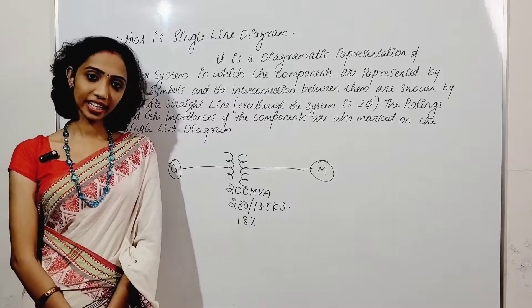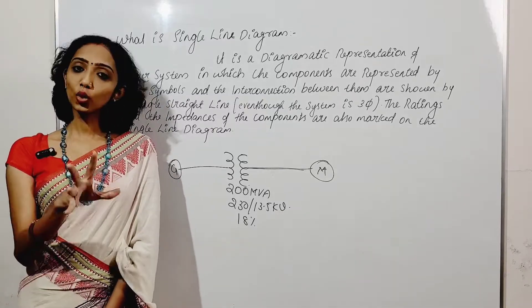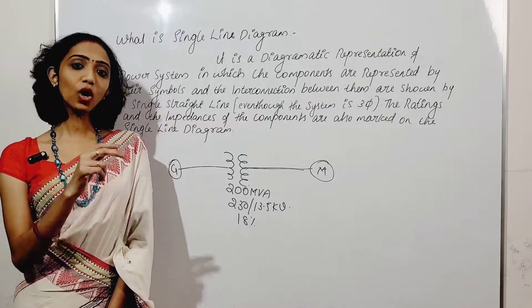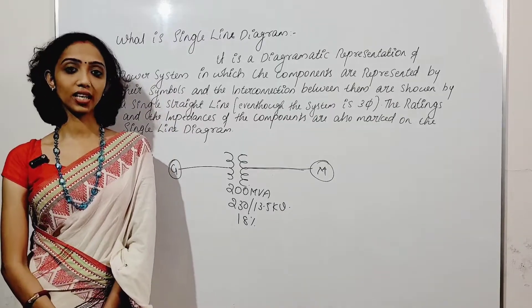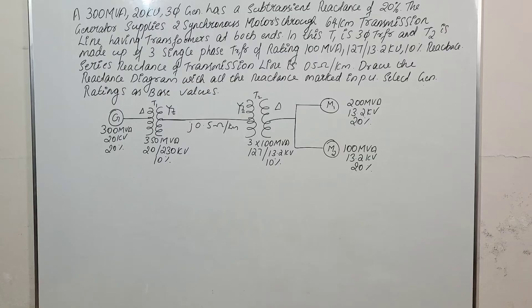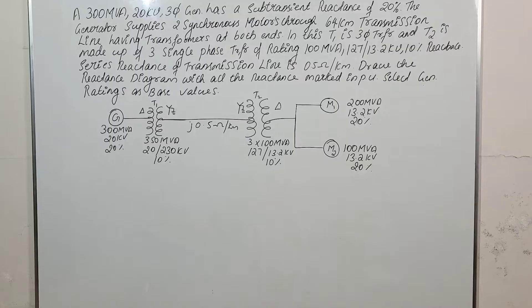We can write the numerical diagram in the first module. In the first module we have the fault calculation. Select the generator ratings as the base value. The base MVA, or MVA new, is equal to 300 and the KV new is equal to 20 kV. The base KV value always changes at different sections of the single line diagram.